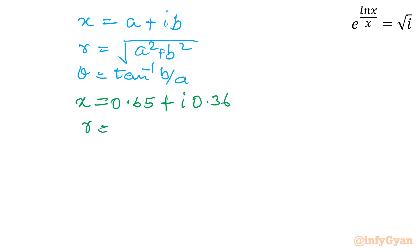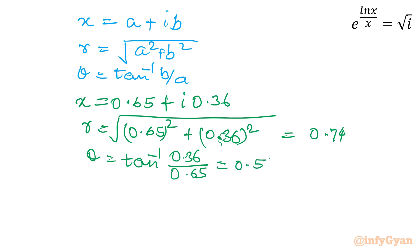So if I will calculate our r then it will become 0.65 square plus 0.36 square. If you will calculate this value then this is coming out 0.74. Theta if you will find out tan inverse by b upon a imaginary over real part. So I will write 0.36 over 0.65. This value is coming out 0.512.